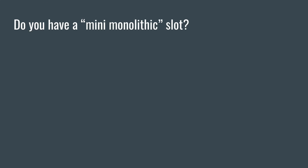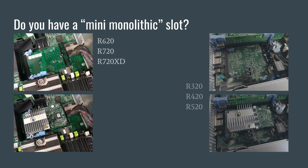To begin with, you have to determine if you have a mini monolithic slot, as this will be a deciding factor in your HBA choices. The mini monolithic slot is basically a special slot on the motherboard that Dell uses for their integrated storage controller, but unlike the previous generation of Dell PowerEdge servers, this does not use a standard PCIe slot. If you have a mini monolithic slot, you will also notice that you have a SAS cable from the storage backplane plugged directly into the motherboard instead of the storage controller itself.